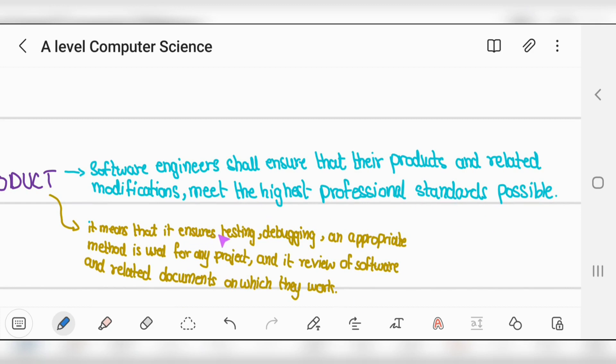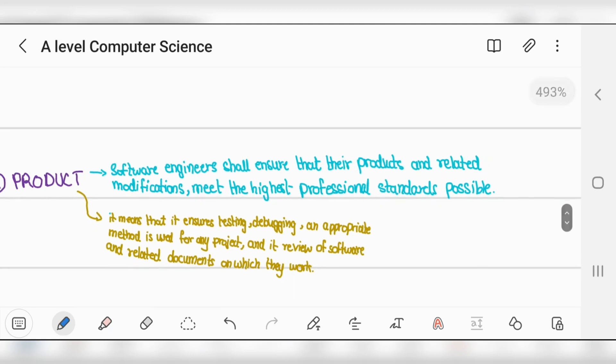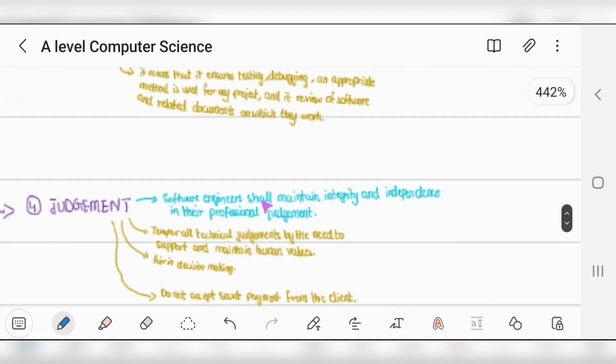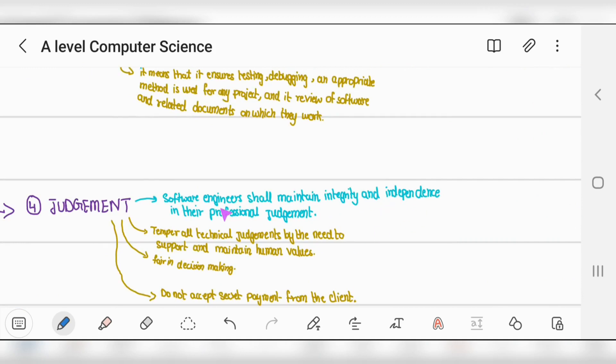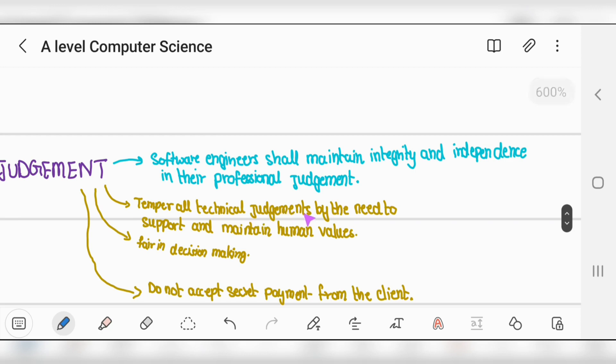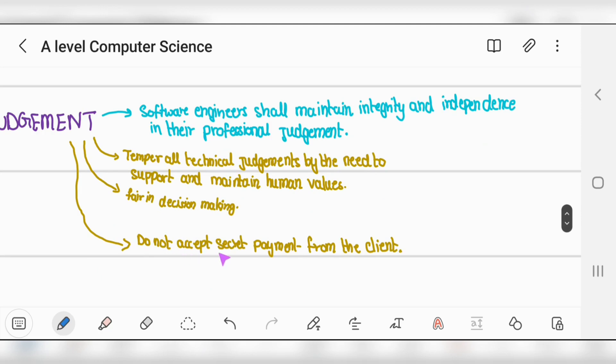Number four, judgment: software engineers shall maintain integrity and independence in professional judgment, temper technical judgment by the need to support human values, be fair in decision making, not biased, and not accept secret payments from clients.